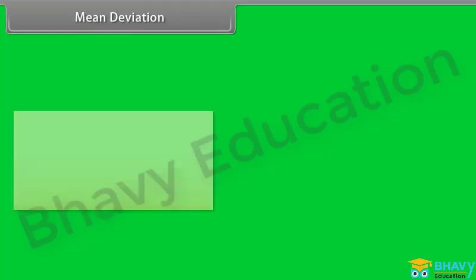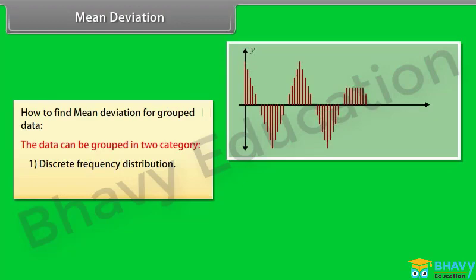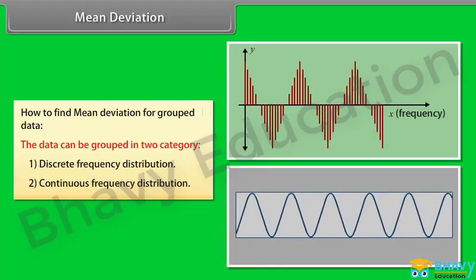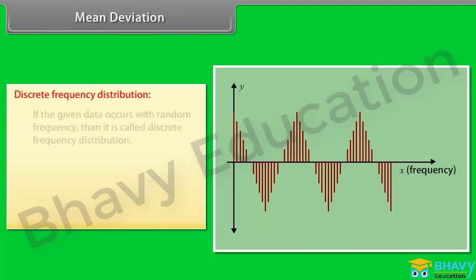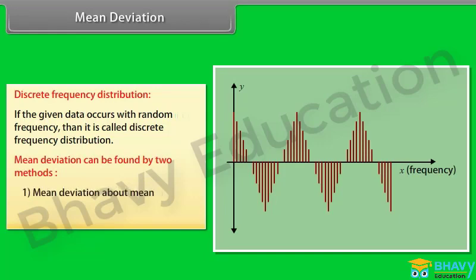Mean Deviation for grouped data. The data can be grouped in two categories: discrete frequency distribution and continuous frequency distribution. If the given data occurs with random frequency, it is called discrete frequency distribution. Mean deviation can be found by two methods: mean deviation about mean, and mean deviation about median.